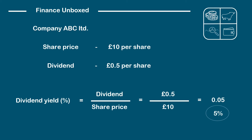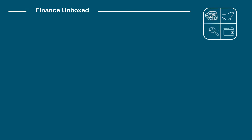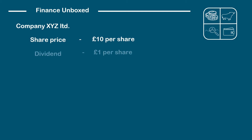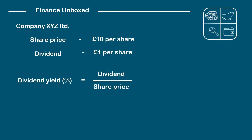Let's take another company. It has the same share price of £10 per share but a dividend of £1 per share, giving a dividend yield of 10%. Now as an investor, does this mean that the company with the 10% dividend yield is a better investment than the company with a 5% dividend yield?